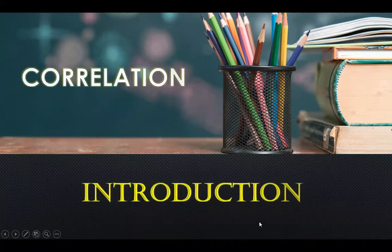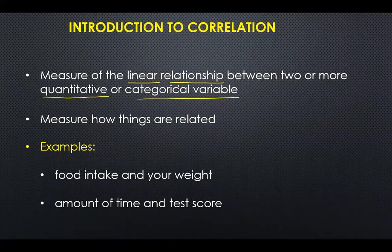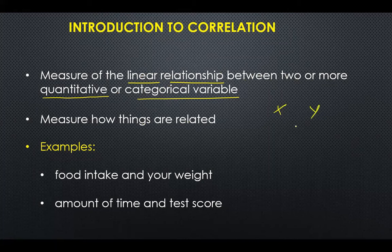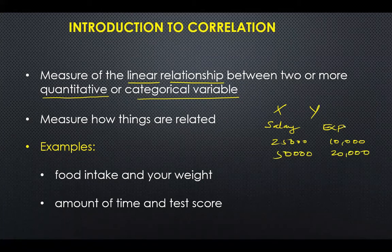Correlation is a measure of the linear relationship between two or more quantitative or categorical variables. For example, we can have a variable called salary and a variable called expense. If salary is 25,000 and expense is 10,000, then savings is 15,000. We can look at how salary and expenses are related together — that's what correlation measures.